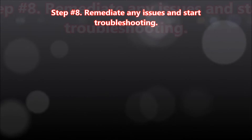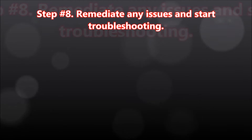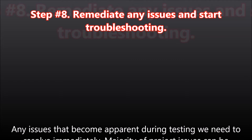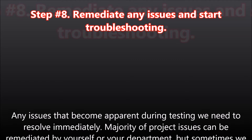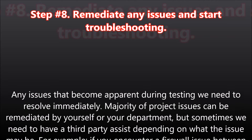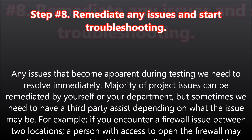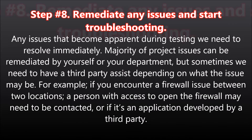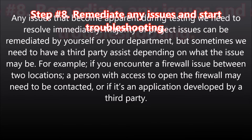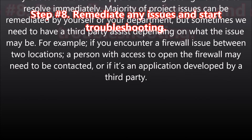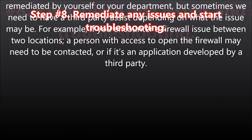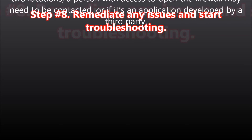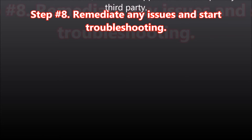Step number eight: remediate any issues and start troubleshooting. Any issues that become apparent during testing need to be resolved immediately. The majority of project issues can be remediated by yourself or your department, but sometimes a third party is needed depending on the issue. For example, if you encounter a firewall issue between two locations, a person with access to open the firewall may need to be contacted, or if it's an application developed by a third party.